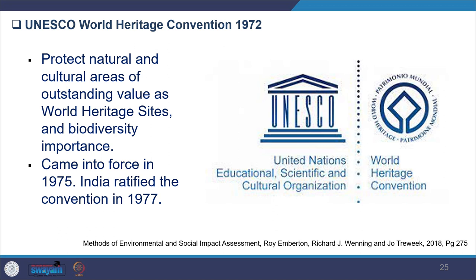The UNESCO World Heritage Convention (1972) targets protection of natural and cultural areas of outstanding value as World Heritage Sites, including some sites identified for their biodiversity importance. It came into force in 1975 and India ratified the Convention in 1977.